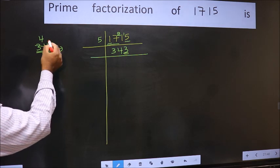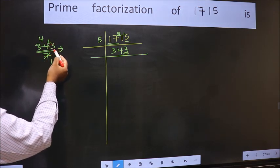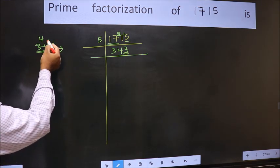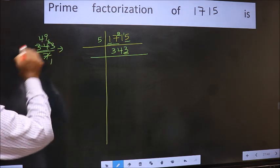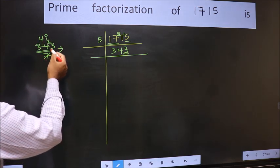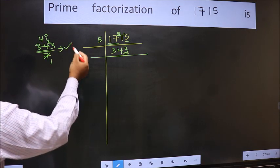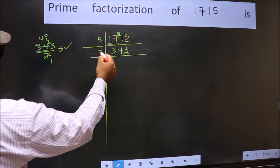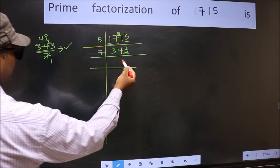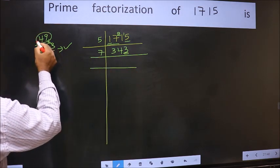34-28=6, carry forward 6 to make 63. When do we get 63 in the 7 table? 7×9=63. No number has been left out, so this is divisible by 7. So we write 7 here, and here we write the result, 49.